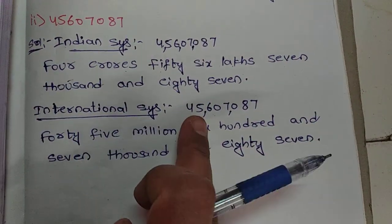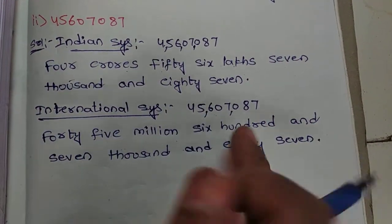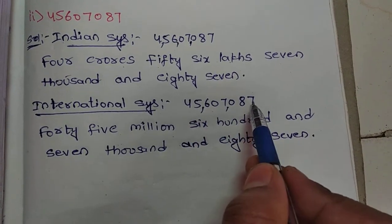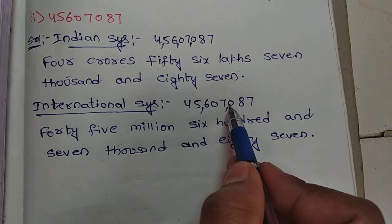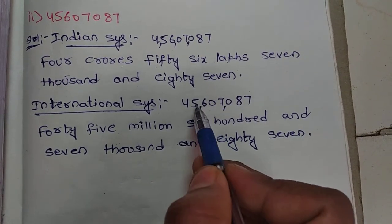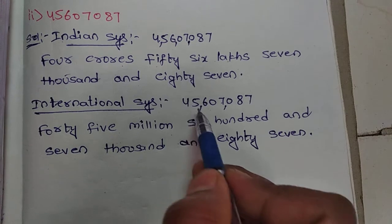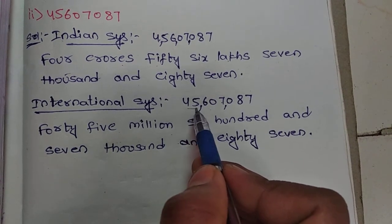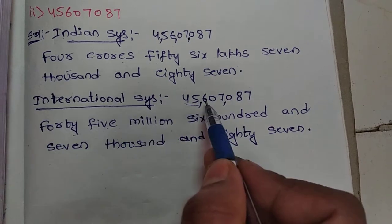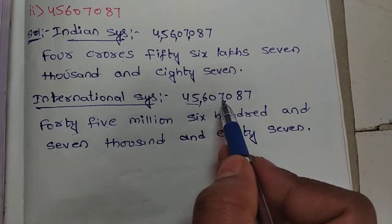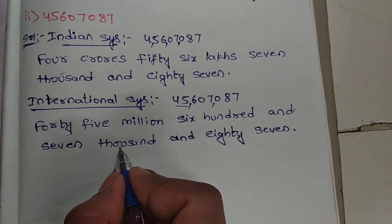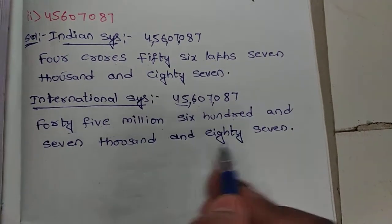In the International system, each period has three place values. The place values are: units, tens, hundreds, thousands, ten thousands, hundred thousands, millions, ten millions. The number name is: forty-five million, six hundred and seven thousand and eighty-seven.